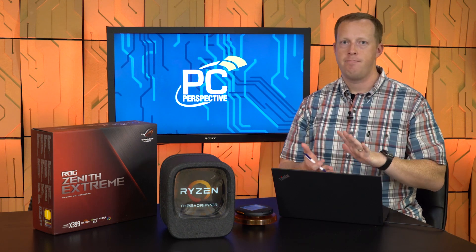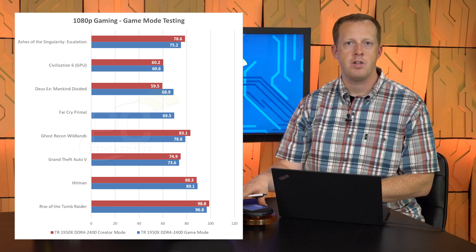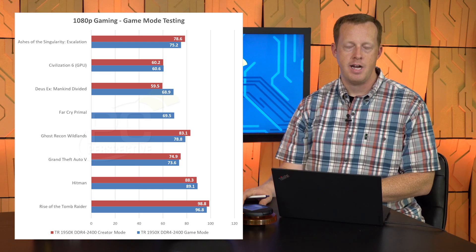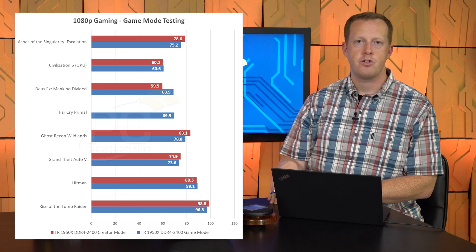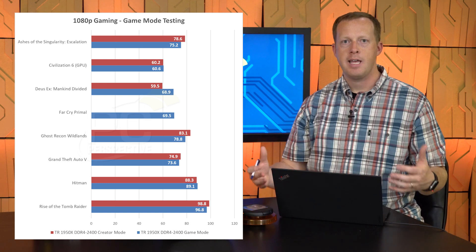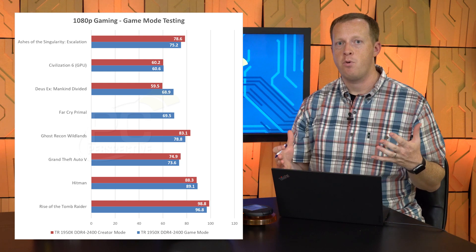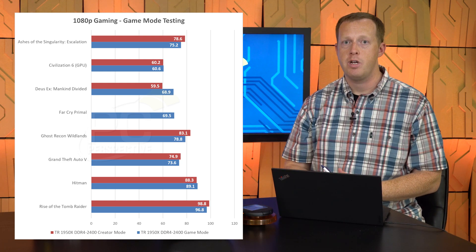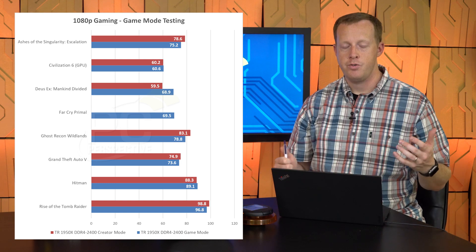When looking at NUMA versus UMA, the general performance implications for gaming are that the difference is minimal at best — maybe one oddity where we saw around a 10% difference in Deus Ex Mankind Divided, which was faster in local/NUMA mode versus distributed mode. In general, the gaps are pretty small, and my recommendation would be to keep the platform in UMA/distributed mode because of the advantages that provides for the rest of the applications you may be using.